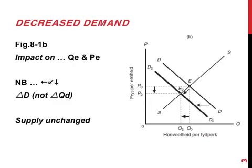The opposite is true in the case of a decrease in demand. The whole demand curve moves towards the left. The end result is a new equilibrium at a lower equilibrium price and a smaller equilibrium quantity. Please note that this is not a change in the quantity demanded — it is a change of the whole demand curve. The supply curve remains unchanged.